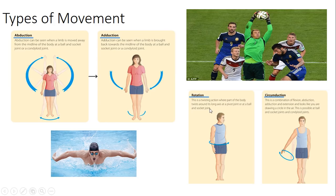We also have rotation - this is a twisting action where a part of the body twists around. For example, if you were doing a somersault as a gymnast, you'd rotate your whole body. And then we have circumduction, which is a combination of flexion, adduction, abduction and extension, and it looks like you're drawing a circle in the air. In this picture, the swimmer's shoulders are circumducting around the joint to help perform the swimming action. Make sure you don't mix those two up - rotation is about the whole body twisting, while circumduction is the combination of flexion, abduction, adduction and extension together.